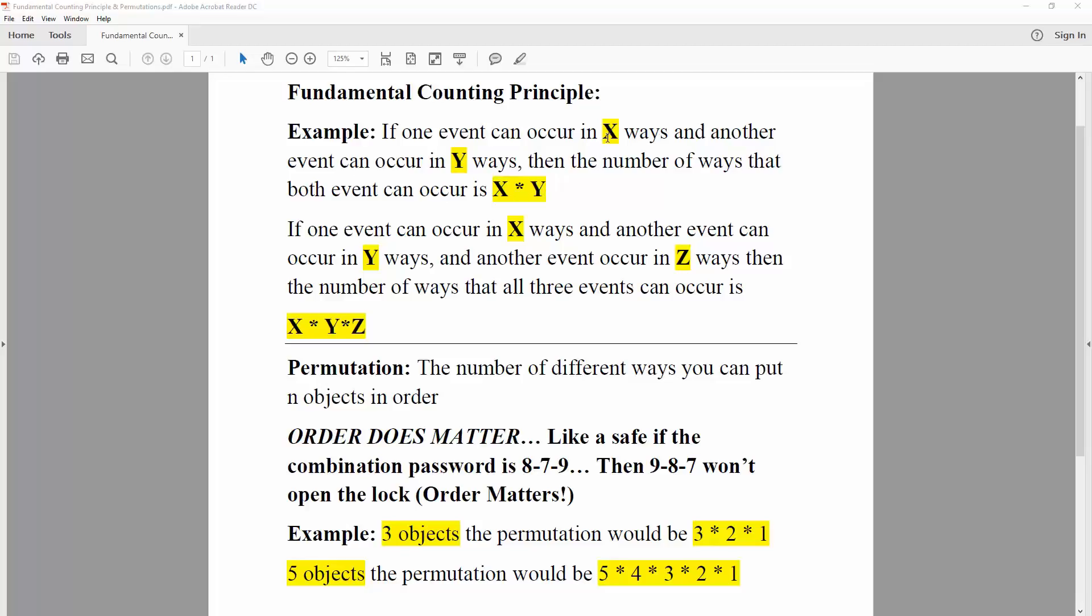If one event can occur in three ways and the other event can occur in five ways, the number of ways both events can occur would be three times five. Likewise, if you have another event like z, you simply just multiply it, so x times y times z.